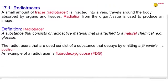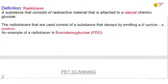What is a radiotracer? A radiotracer is a substance that contains a radioactive material that is attached to a natural chemical e.g. glucose. But radiotracers that are used consist of a substance that decays by emitting beta plus particle that is a positron. An example of a radiotracer is fluorodeoxyglucose, FDG, coming from fluorodeoxyglucose.